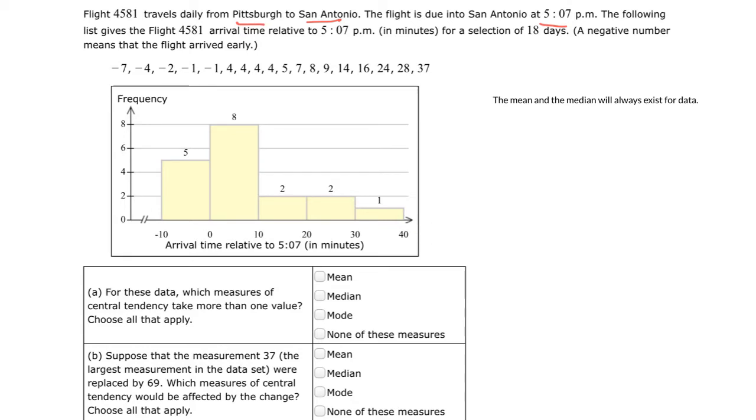So the question then becomes, when we look at this, it says, which measures of central tendency take on more than one value? There's really only one that can take on more than one value, and that's the mode. So it has the possibility of taking on more than one value.